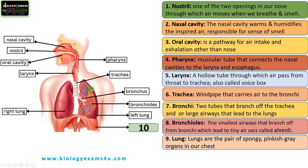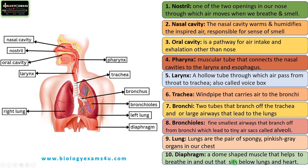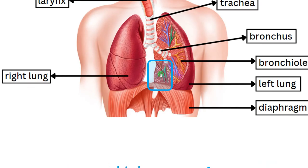The left lung has only two lobes: the upper or superior lobe and the inferior or lower lobe. The left lung is slightly smaller than the right lung and has a notch to give space or room for the heart, called the cardiac notch. The diaphragm is a dome-shaped muscle that helps to breathe in and breathe out, sitting below the lungs and the heart.